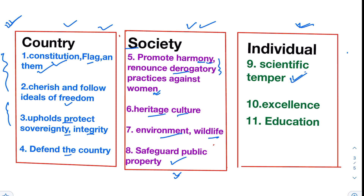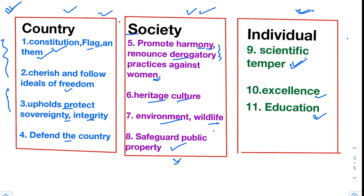As an individual, we have to promote scientific temper, humanism, strive for excellence, and ensure education for our children. Dividing these 11 duties into the three categories — Country, Society, and Individual — makes them easy to remember. A country needs to be protected and maintain its sovereignty so it can be defended against attack. A society needs its culture, environment, and public property protected, with harmony among people and no derogatory practices against women. And as individuals, we need to develop scientific temper, excellence in every field, and education for our children.